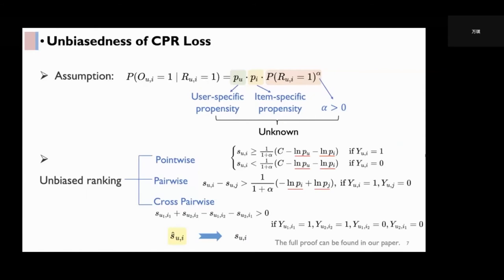User-specific propensities and item-specific propensities are generally higher for active users and popular items. And the power of the relevance probability is a positive constant. It reflects that higher relevance can contribute more to the exposure probability. The propensity and the alpha value are all unknown values.